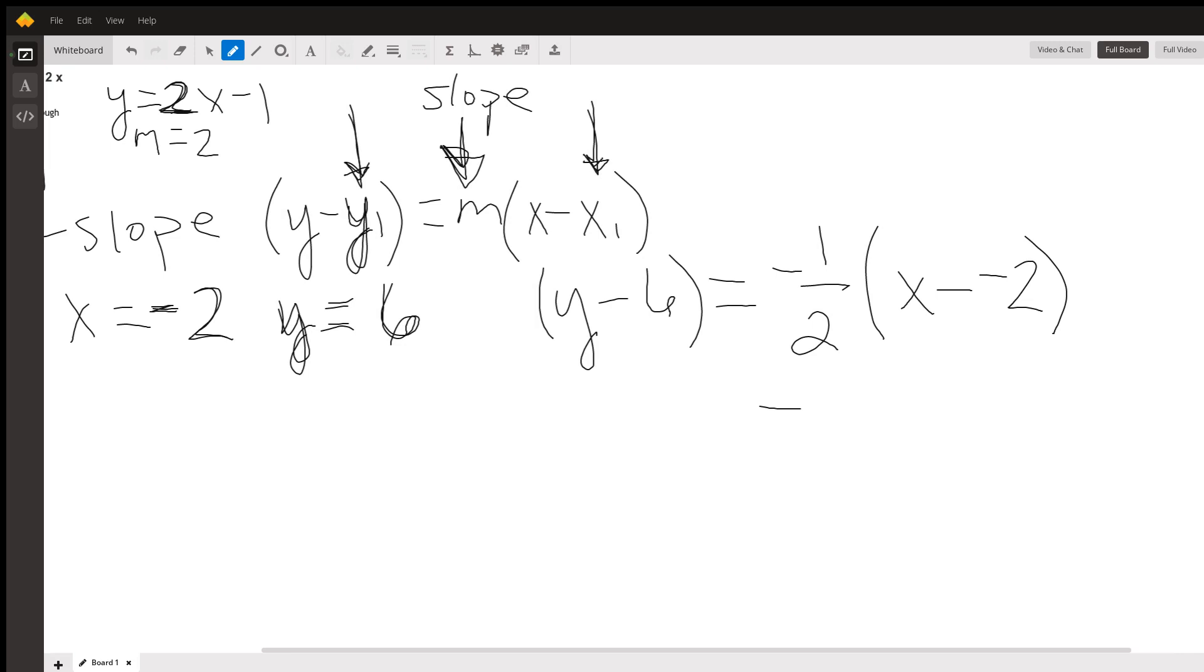We're not going to write it this way. A better way to write this is y minus 6 equals negative one-half times (x + 2). We don't write minus negative 2.